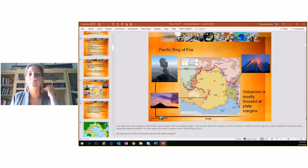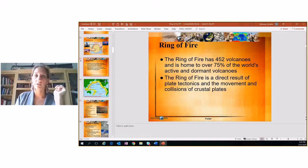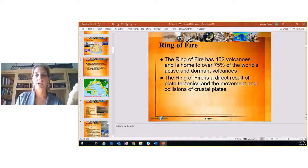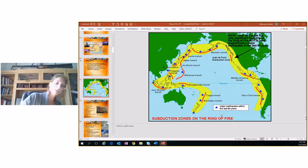Ring of Fire. 452 volcanoes on the Ring of Fire, home to over 75% of the world's active and dormant volcanoes. So not all volcanoes are found on the Ring of Fire, but a large majority are. Ring of Fire is a result of plate tectonics and the movement and collisions of these plates. So as they move, as they collide, as they rub and do all that, they cause volcanoes, which can be found a lot of times in the Ring of Fire. Here's my favorite map of the Ring of Fire.